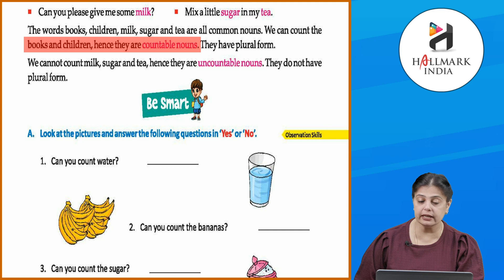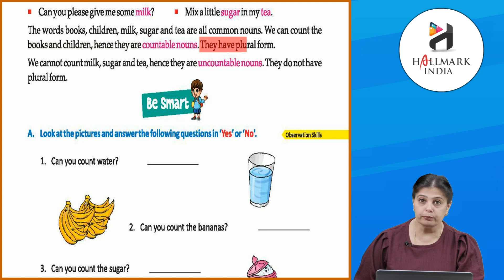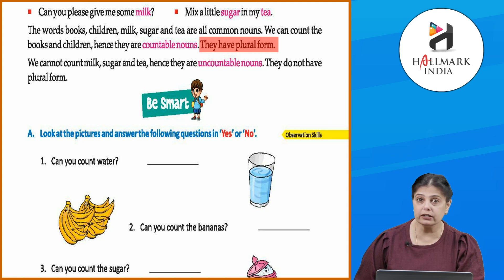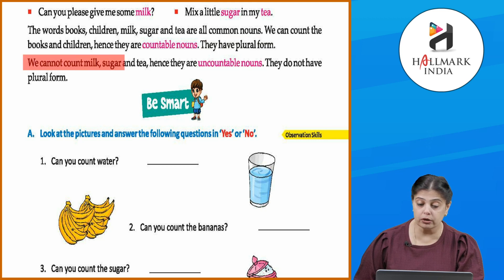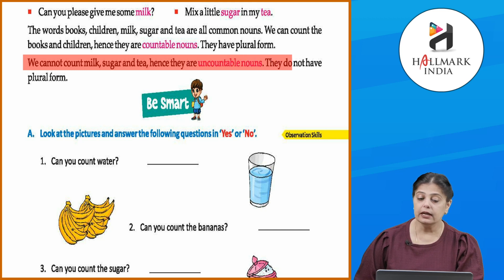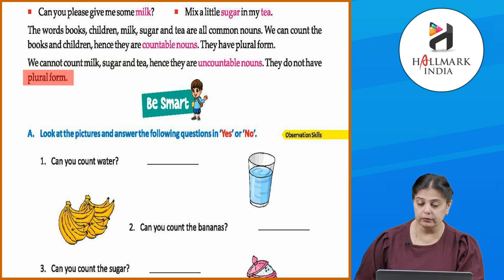Toh hum count kar sakte hain — kitne books hain, the number of books we can count, the number of children we can count — that is why they are countable nouns and they have plural forms. We cannot count milk, sugar, or tea, hence they are uncountable nouns. They do not have a plural form.